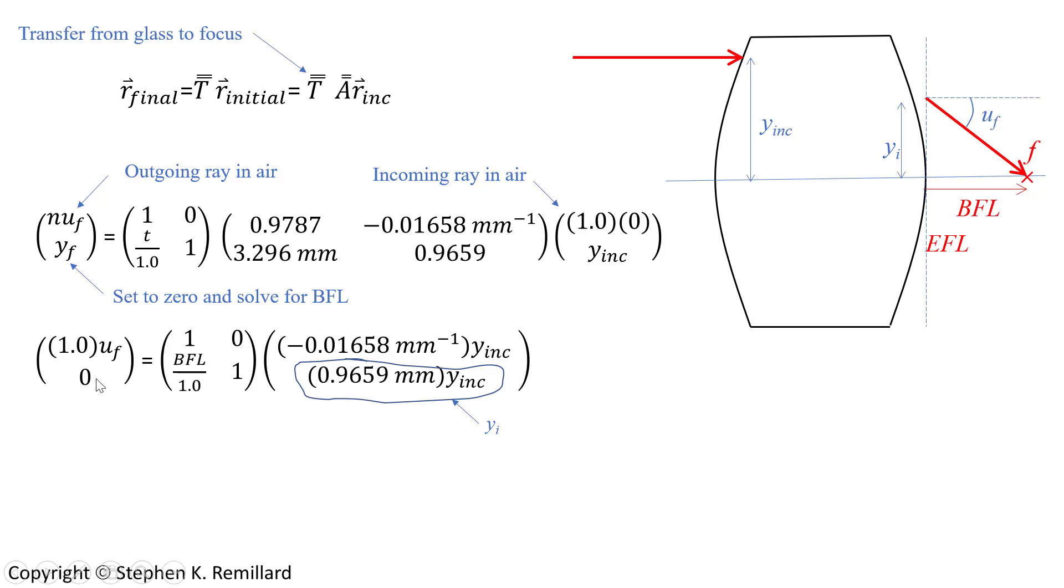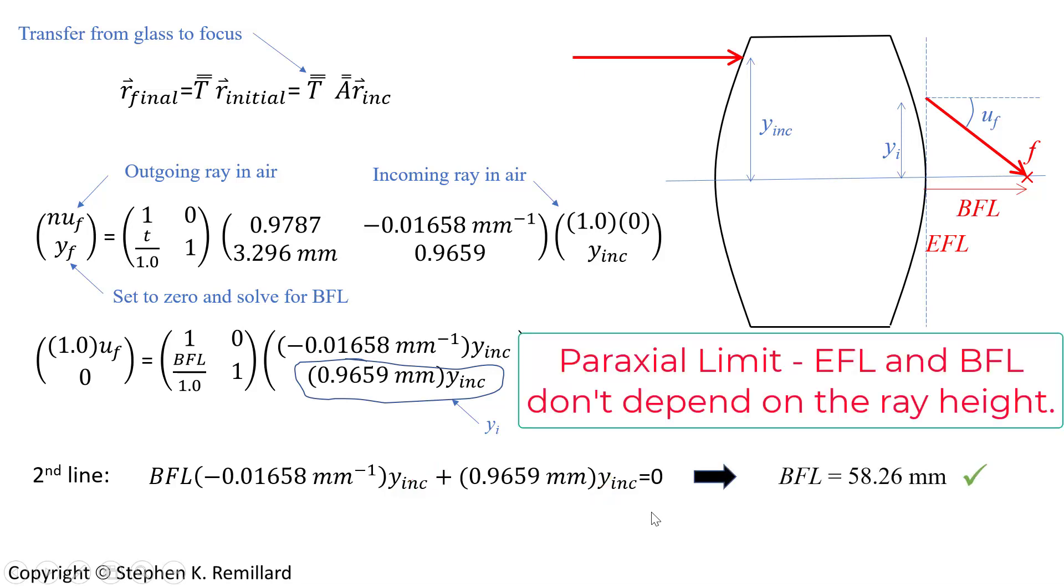Putting in BFL for t and zero for y final, we have a simple expression to solve. Look at the second line of this matrix equation. We can figure out the back focal length. Back focal length times minus 0.0168 times y incident equals 0.9659 times y incident. So the important thing is, y incident cancels out. You notice it wasn't given. Only the assumption that we're in the paraxial limit.